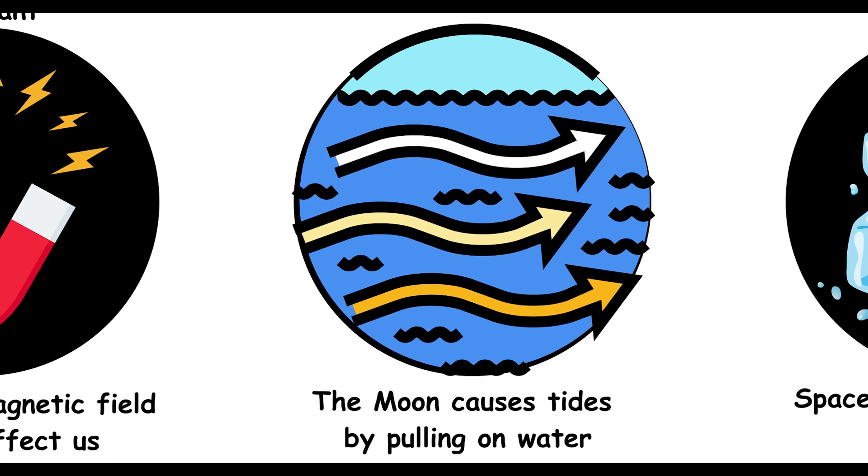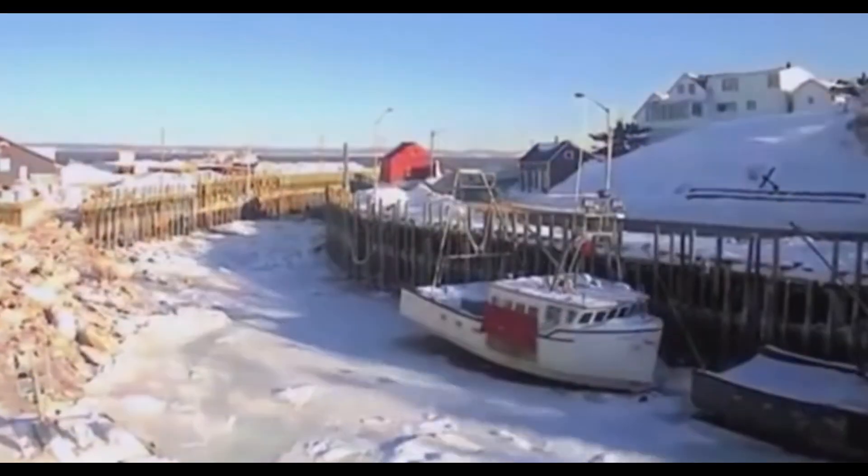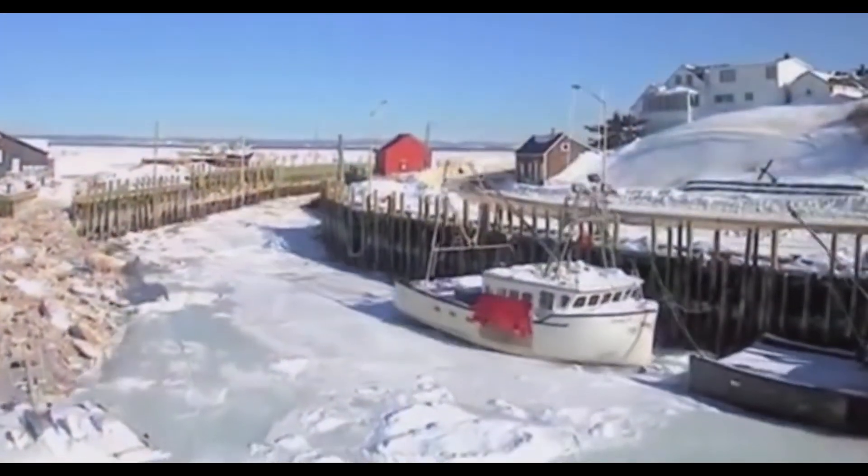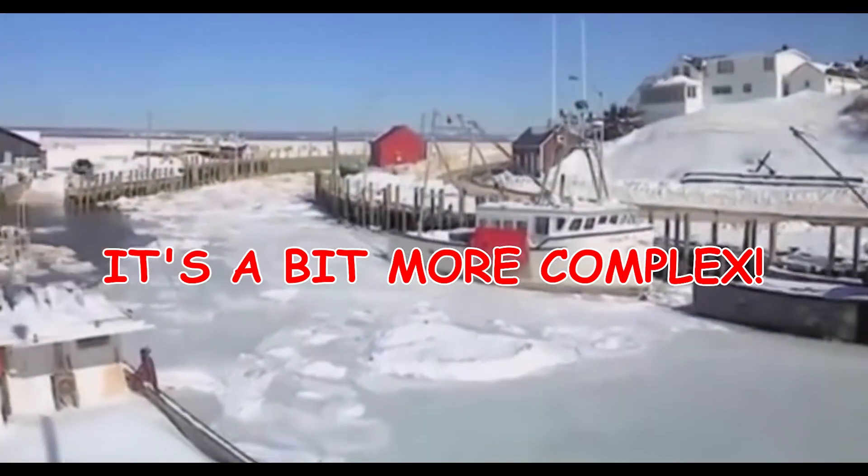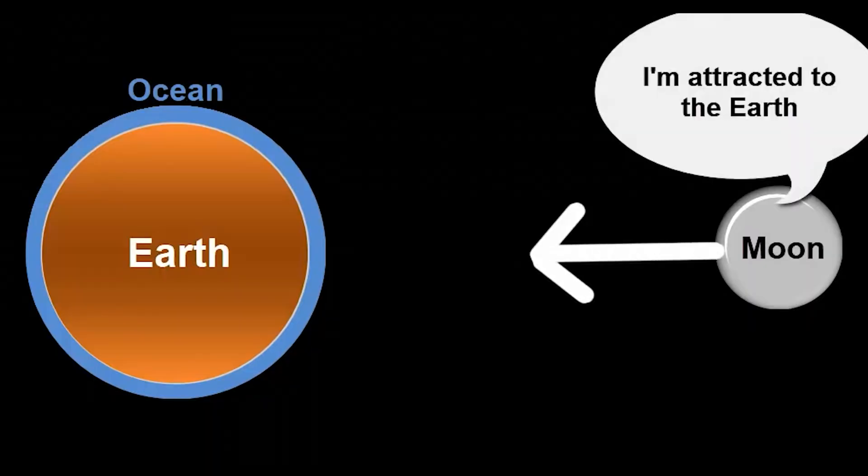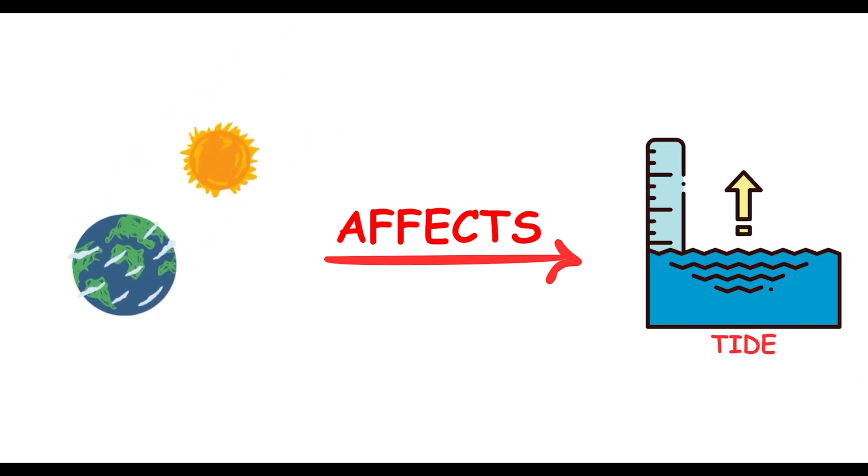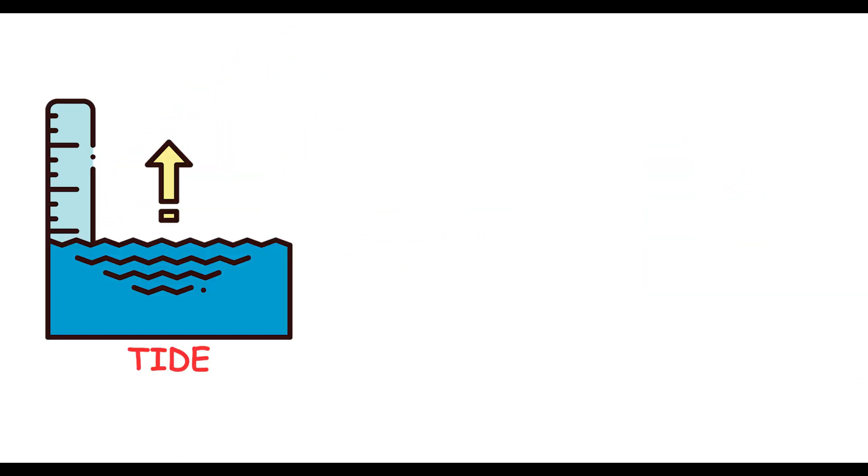The moon causes tides by pulling on water. Did you know the moon causes tides not just by pulling on water? It's a bit more complex. The moon's gravity pulls on the Earth, causing bulges in the ocean on both sides. The sun also affects tides, but to a lesser extent. So, tides are a dance between the Earth, moon, and sun.